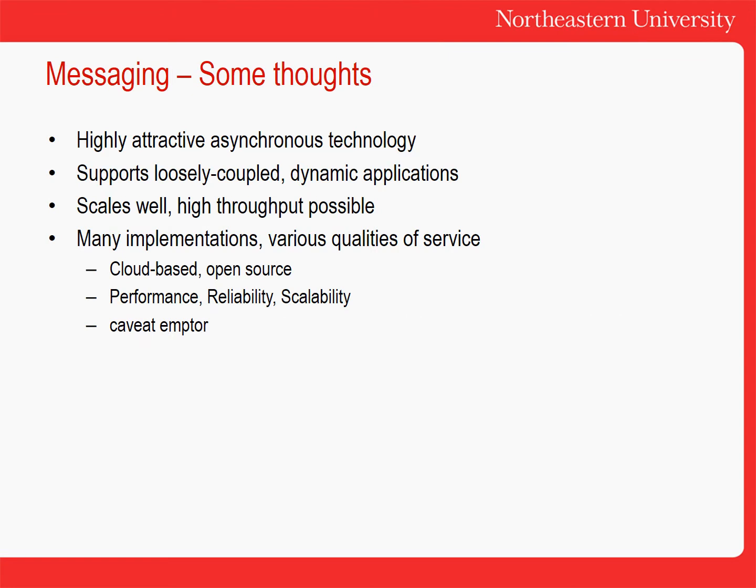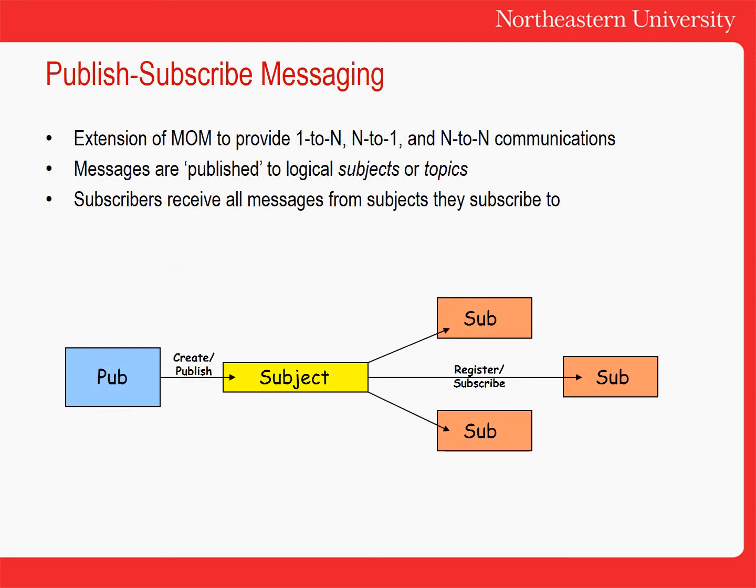Messaging is highly attractive — it's asynchronous, it decouples the senders and receivers, and it enables you to build dynamic applications because senders and receivers can come and go. It scales well, especially if you can scale the queuing infrastructure by distributing it across multiple servers. There are many implementations, both standards-based and proprietary — IBM's MQ Series being the classic — but you'll find queuing services available on AWS and all major cloud platforms. Publish-subscribe extends message-oriented middleware to provide one-to-many and many-to-many communications. Messages are published to topics and receivers subscribe to that logical topic and receive all the messages pushed to it.